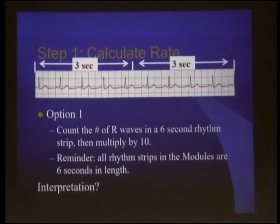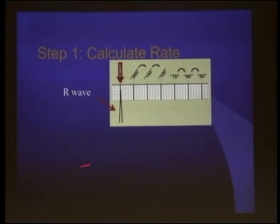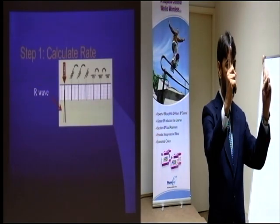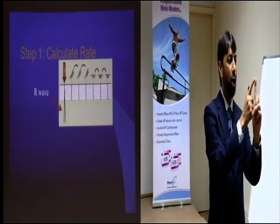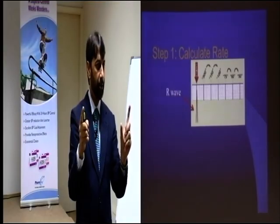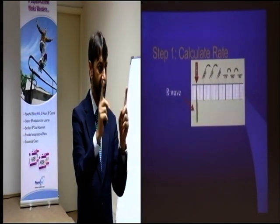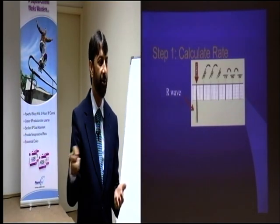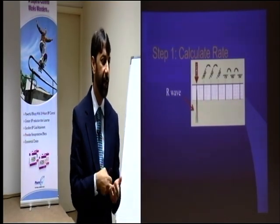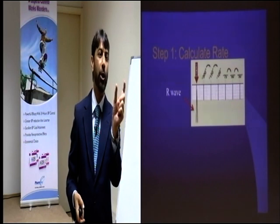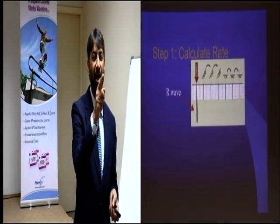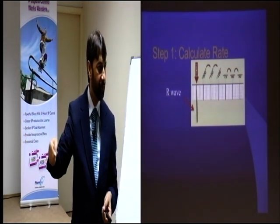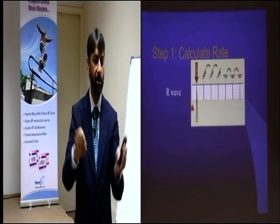For rate calculation, the golden principle is: one large square = 300, two large = 150 — but that applies only to regular rhythms. For irregular rhythms, look at a six-second strip. One second equals five large squares, so count six seconds and count how many QRS complexes are there, then multiply by 10. That gives the rate for 60 seconds. This formula applies to both regular and irregular rhythms.